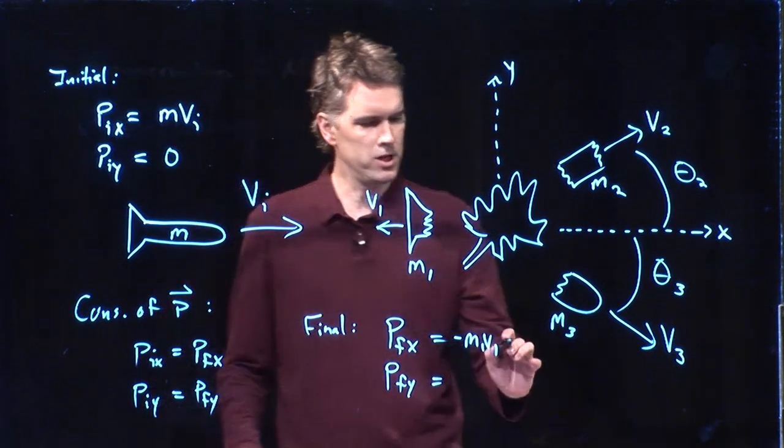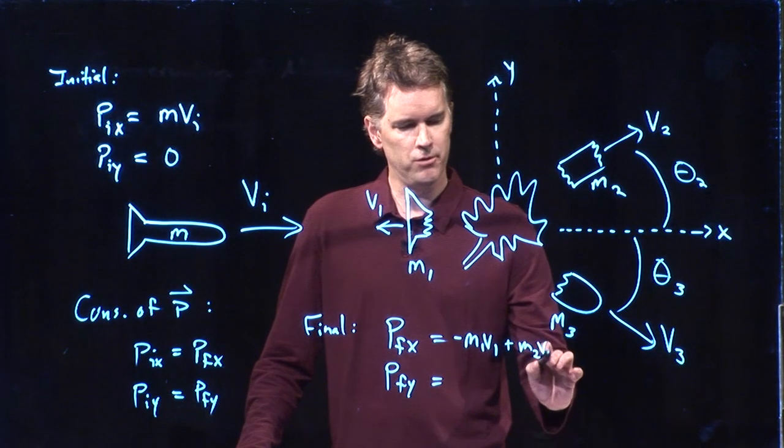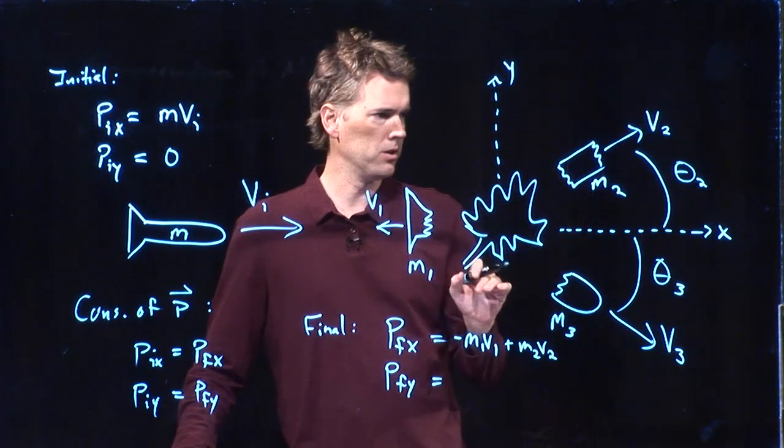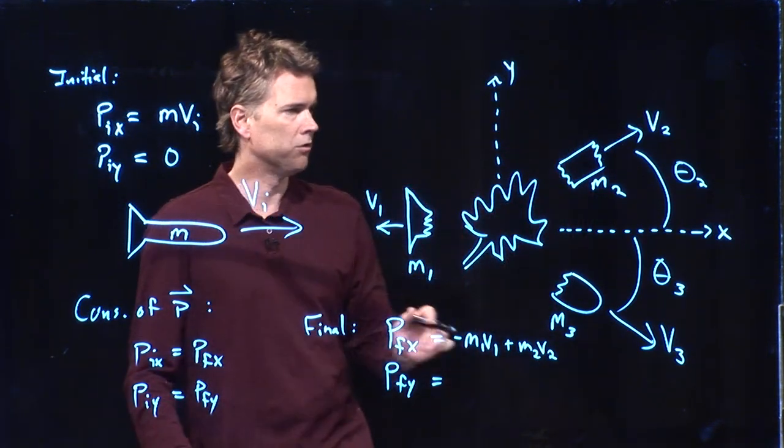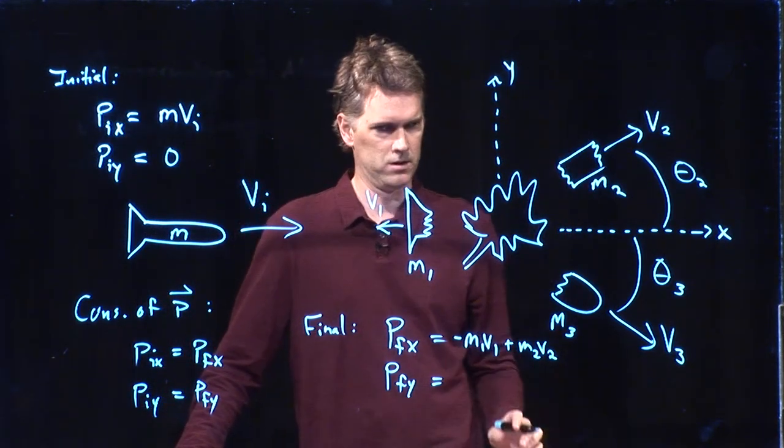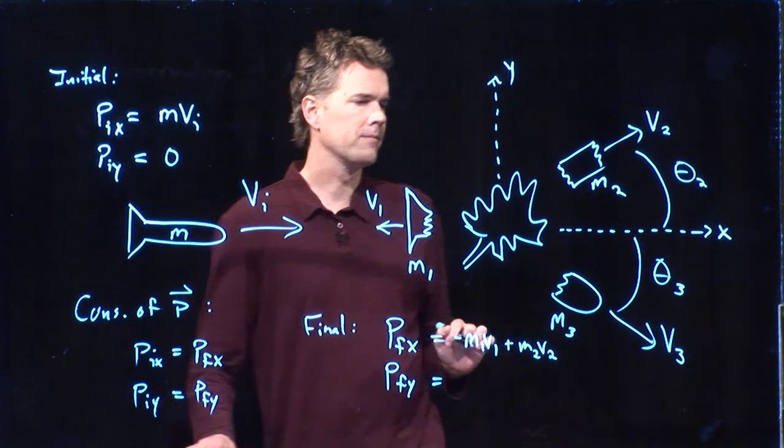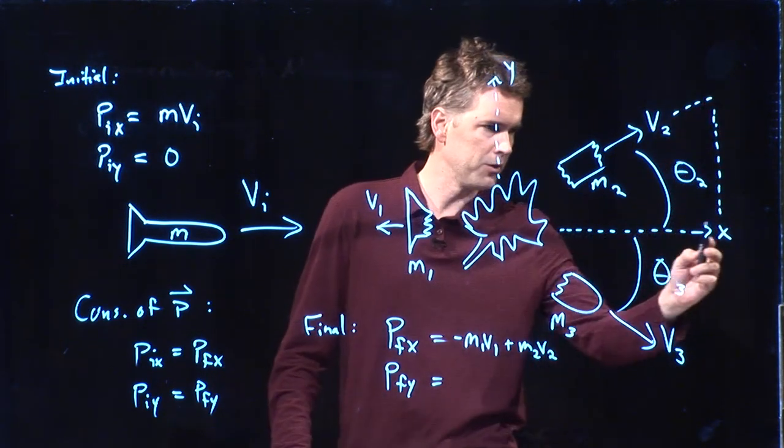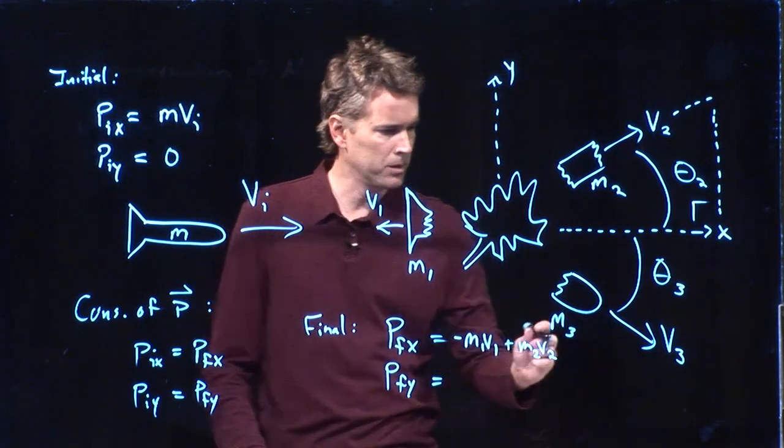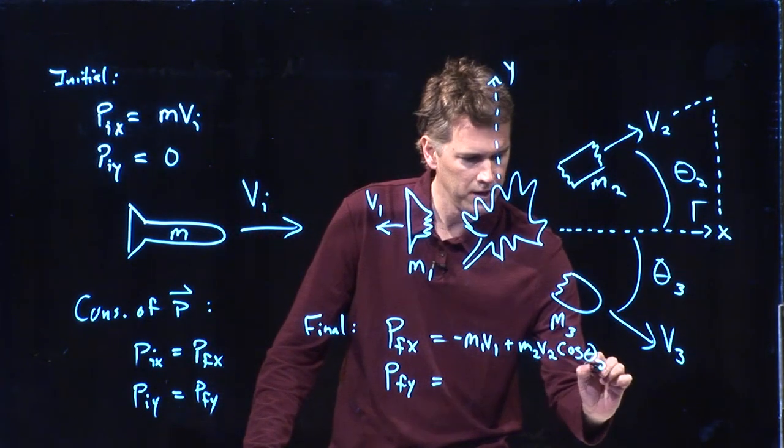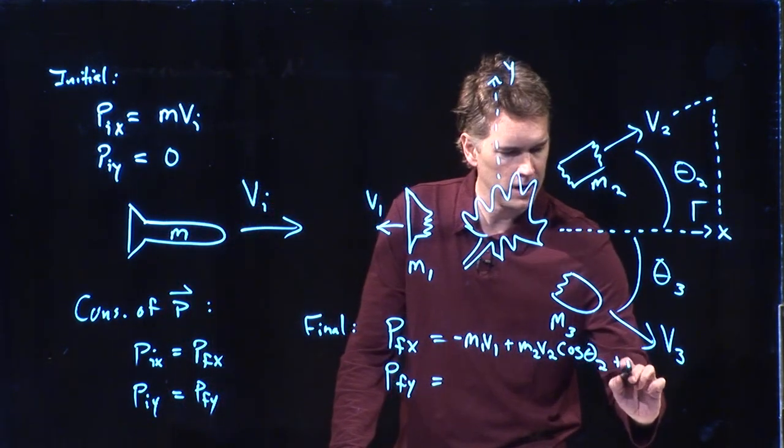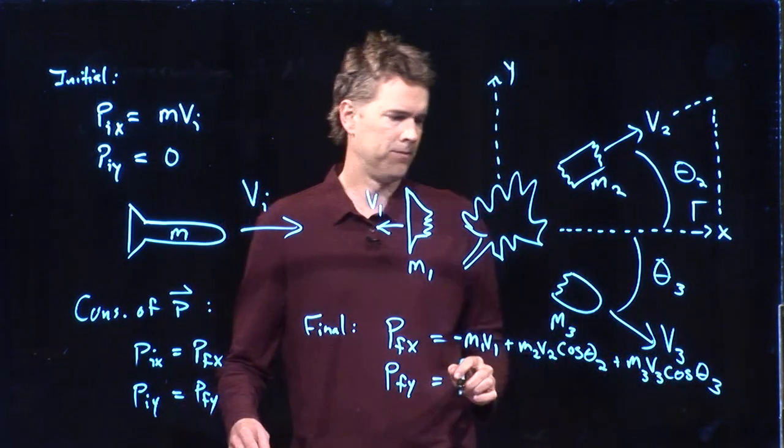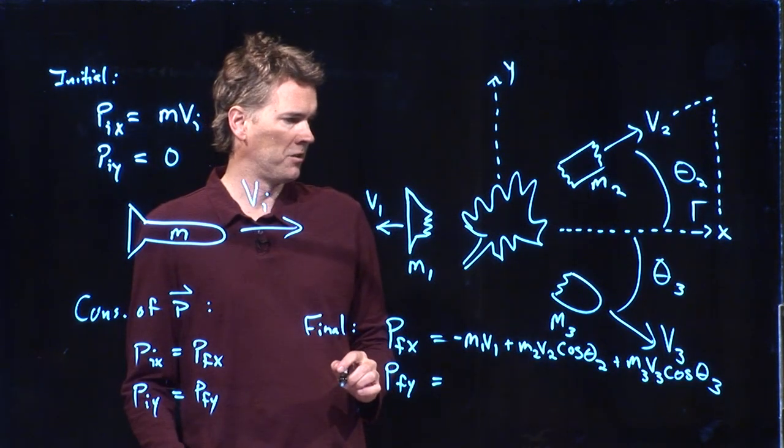What about m2, v2? m2, v2 is the momentum of this particle, but it's not entirely in the x direction. There's some component in the x direction. So, Joseph, is that component in the x direction, is that sine or cosine? Cosine? Cosine, right? This is my triangle right here. And so this side of the triangle, since this is the right angle, is going to be cosine theta 2. And likewise for m3, we're going to have m3, v3, cosine theta 3. All right, that looks complete for the x.